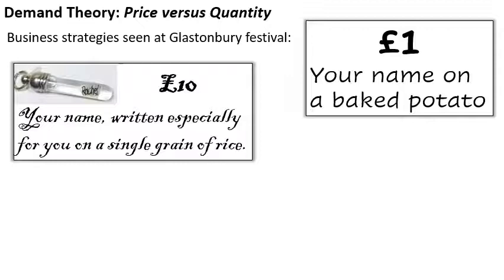We're going to look later on at how the quantity and the price work together in order to determine the revenue — in other words, the total amount of income you get with your business — and also how the costs relate to that. Because even with a simplistic model, we'll find there's some fairly sophisticated mathematics going on behind the scenes that we can use to determine the sweet spot, the perfect price to set in order to get the optimal amount of sales.